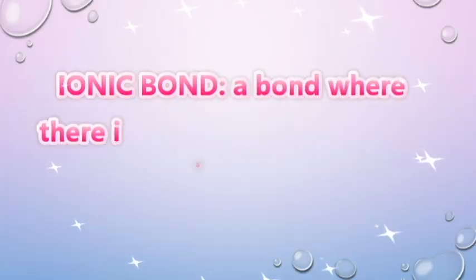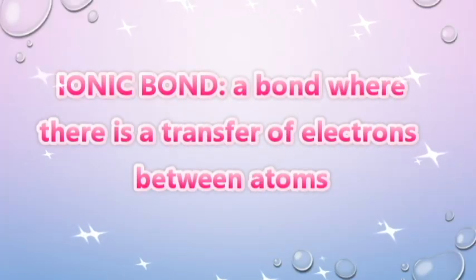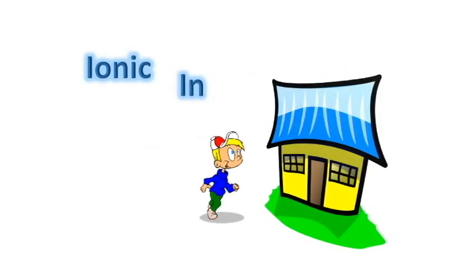Now let's look at ionic bonds. An ionic bond is a bond where there is a transfer of electrons between atoms. When you think of the word ionic, think of the word in as if you're going inside somewhere, sort of like an electron being transferred in to the other elements.